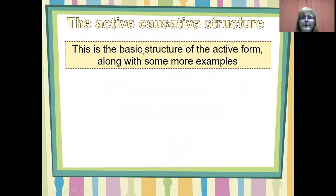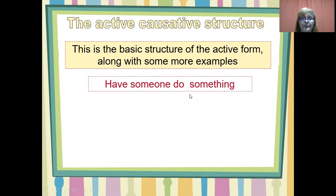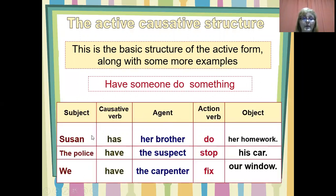The active causative structure. This is the basic structure of the active form, along with some more examples. Have someone do something. You have the subject, the causative verb, the agent, the action verb, and the object. Susan has her brother do her homework. The police have the suspect stop his car. We have the carpenter fix our window.